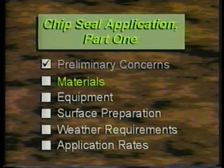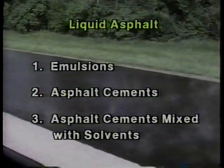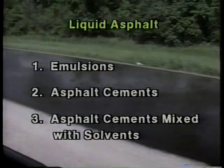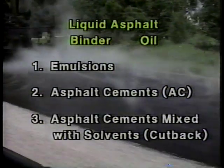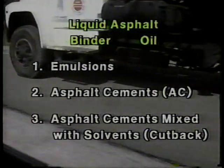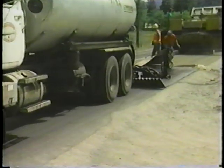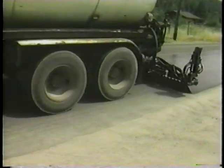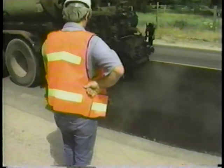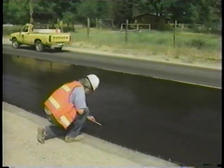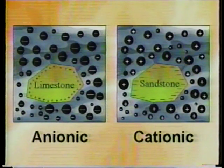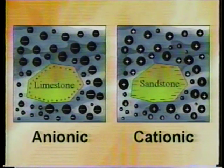The next step is to check the materials. There are three broad categories of liquid asphalt: emulsions, asphalt cements, and asphalt cements mixed with solvents. Asphalt cements are commonly referred to as ACs, and asphalt cements mixed with solvents are called cutbacks. But all three are typically referred to as binder or simply oil. Emulsions contain both liquid asphalt and water. After application, the water evaporates and leaves only the liquid asphalt on the surface — this is called breaking. You can actually see this happening, the emulsion turning from brown to black as the water evaporates. There are two types of emulsions: anionic and cationic, with different electrical charges. The type used has to be compatible with the chips used, and this compatibility must be verified in advance.